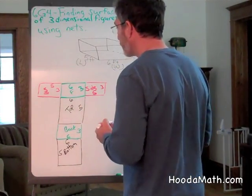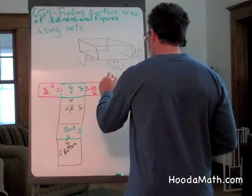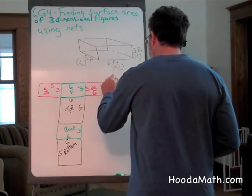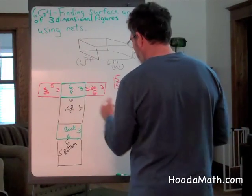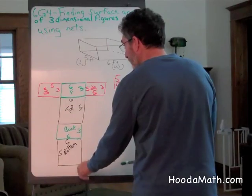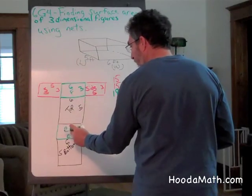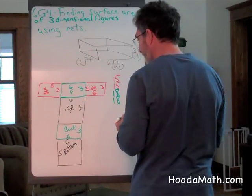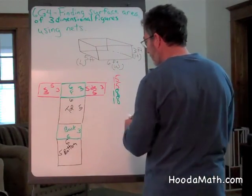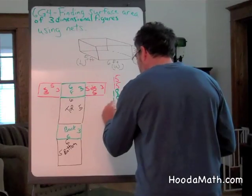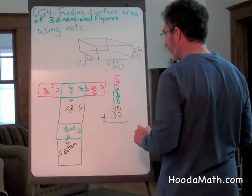And then we have to find the surface area. The surface area of the sides are three times five, which is 15, and there's another 15. The front is six by three. Six times three is 18. And of course, the back is the same. The top is six by five. Six times five is 30. And the bottom, six by five is 30. We add them up to get the surface area.